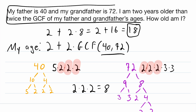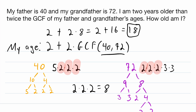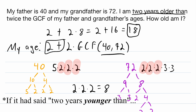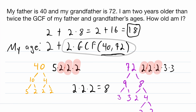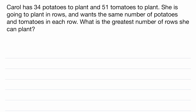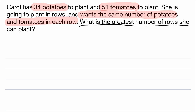With problems like these, you really have to pay close attention to the language that is hiding the math. "Two years older than" means two plus. If it had said "two years less than," we would have subtracted. Or if it had said "half the greatest common factor," we would have multiplied by one half instead. With that said, let's move on to our second problem. Carol has 34 potatoes to plant and 51 tomatoes to plant.